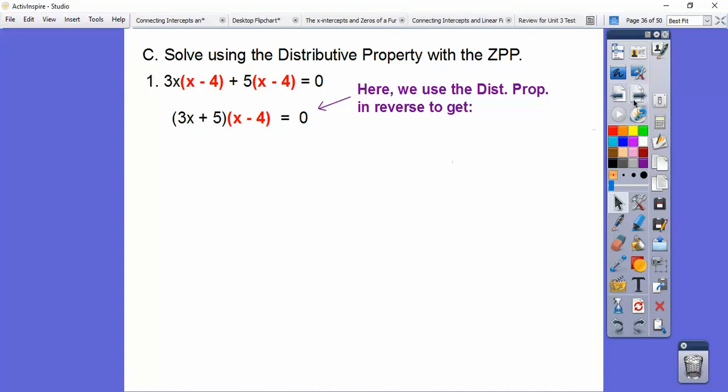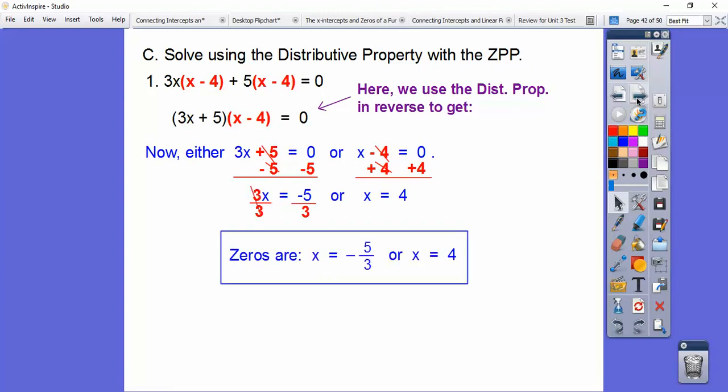All right, then we set each one of those factors equal to 0. Okay, so we're going to go minus 5. Whoops, I lost a page there. Minus 5 on both of those, and then add 4 on both of those. And then so now we've got to divide by 3, and so we get negative 5 thirds or 4.